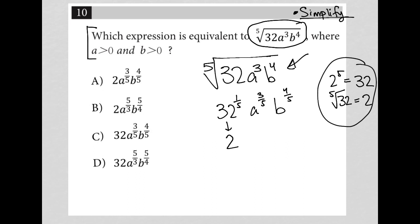Now this a to the three fifths is not going to change because there's no simplification here. My numerator is smaller than my denominator so that's going to remain three fifths. And the same thing for b that's going to also remain four fifths. There's no simplification there. If my numerators were larger than my denominator then there would be something I could do. But since that's not the case here is my final answer and therefore the correct answer here is choice a.